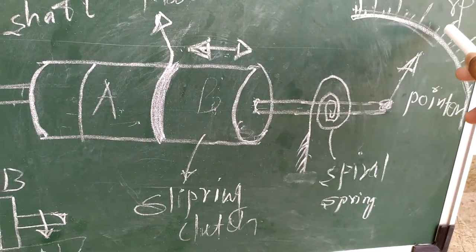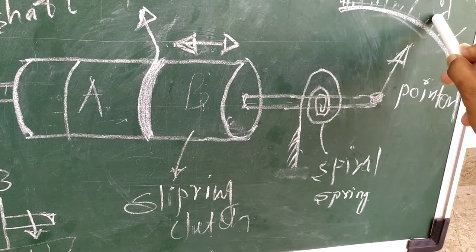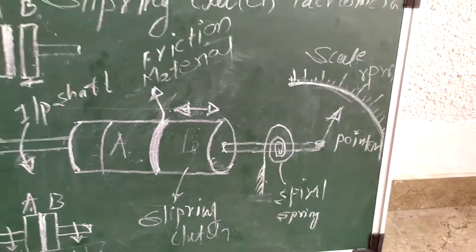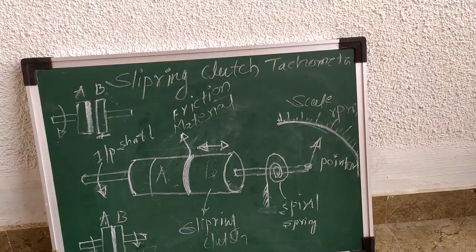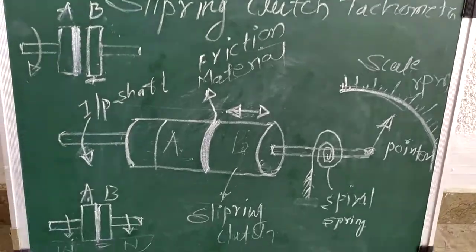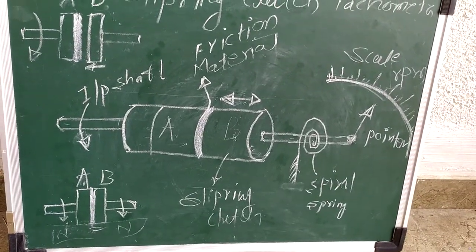Further, what we have to observe: through this mechanical linkages, the pointer moves on this calibrated scale. We have to observe the pointer and we will get the RPM. This is one of the methods of speed measurement. Thank you.